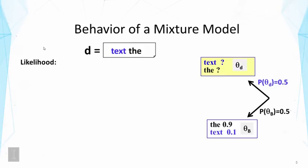So we further assume that the background model gives probability of 0.9 to the word the and text 0.1. Now let's also assume that our data is extremely simple. The document has just two words, text and the. So now let's write down the likelihood function in such a case.